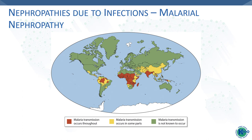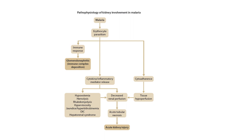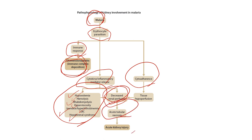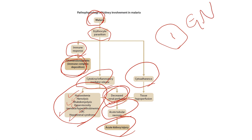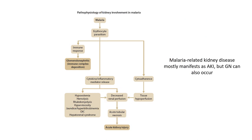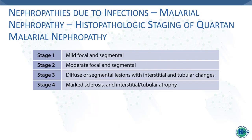What about malaria? Malaria is more common in Africa. Malaria may affect the kidney through two common pathways. The first: malaria causes erythrocyte parasitism, which initiates an immune response and glomerulonephritis. The second pathway depends on cyto-adherence, cytokines, and inflammatory mediators causing hypovolemia, hemolysis, rhabdomyolysis, hyperbilirubinemia, DIC, and hepatorenal syndrome — all causing decreased renal perfusion, acute tubular necrosis, and acute kidney injury. There are four stages in the biopsy of malaria nephropathy.